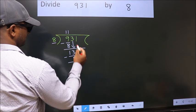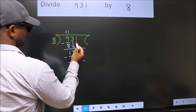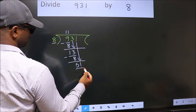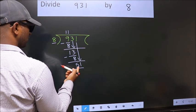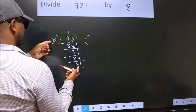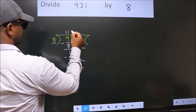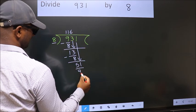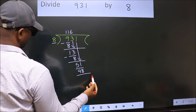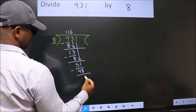After this, bring down the beside number. So, 1 down. So, 51. A number close to 51 in 8 table is 8, 6, 48. Now, we subtract. We get 3.